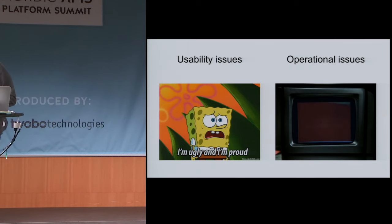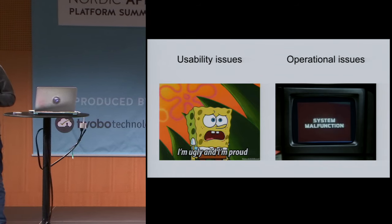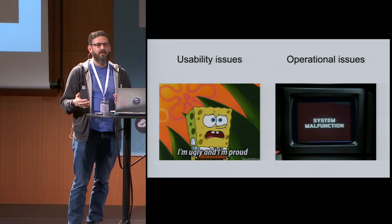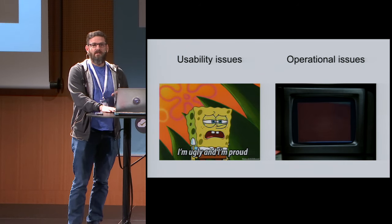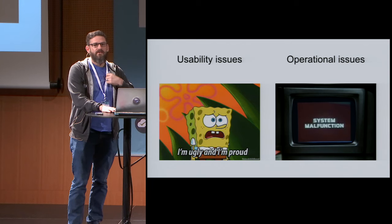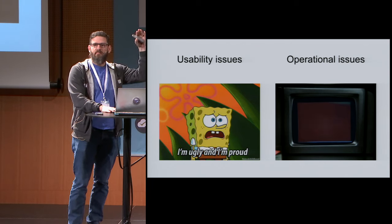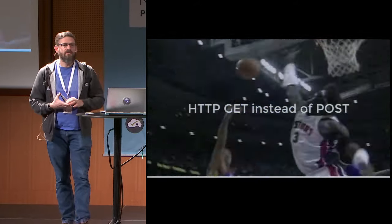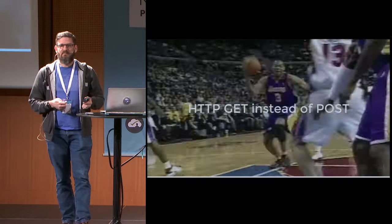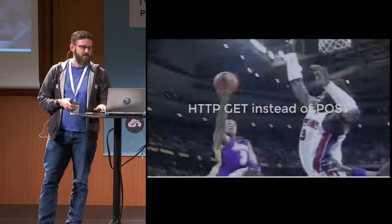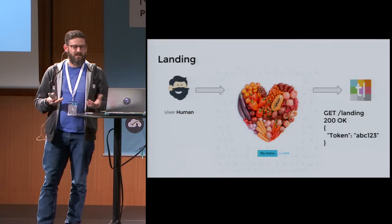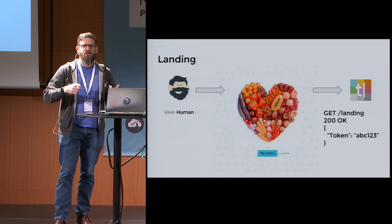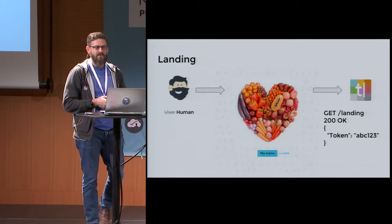There are aspects of building a system about getting the right database or putting the right web application in front of it. But to some extent the way you design your API can set you up for failure. I think some of this will be a little remedial for those who've done a lot of APIs. My hope is there's a spectrum here — it may start a little boring but bear with me. So the first anti-pattern is using GET instead of POST.